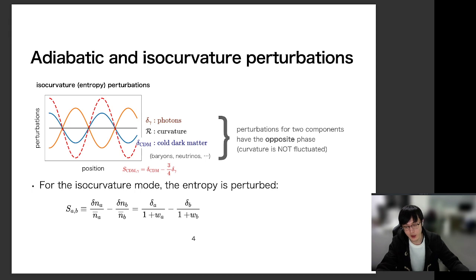And the total energy density fluctuation is cancelled out. And curvature is also constant. In this case, the entropy fluctuation, given by S_CDM gamma in this red equation, arises. So the isocurvature perturbations are also called the entropy perturbations.